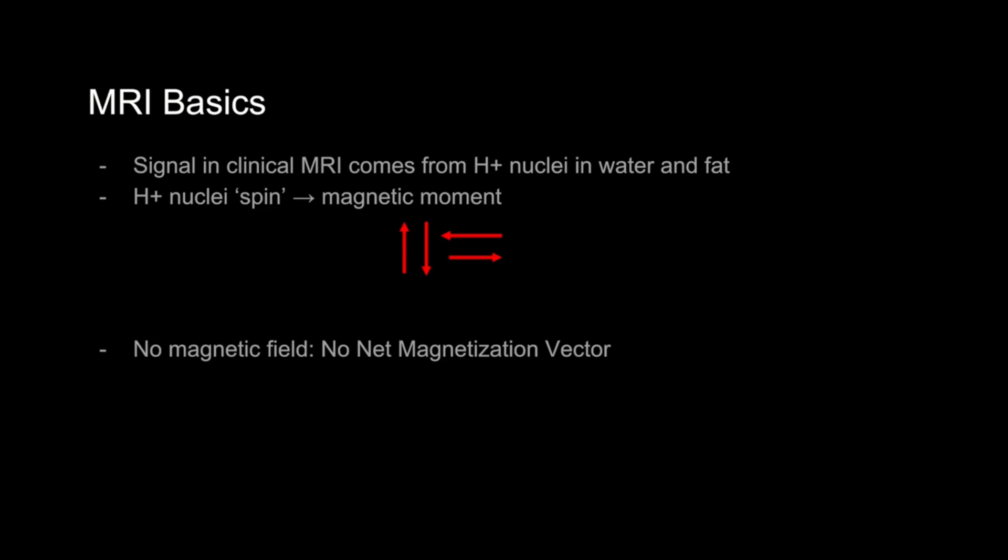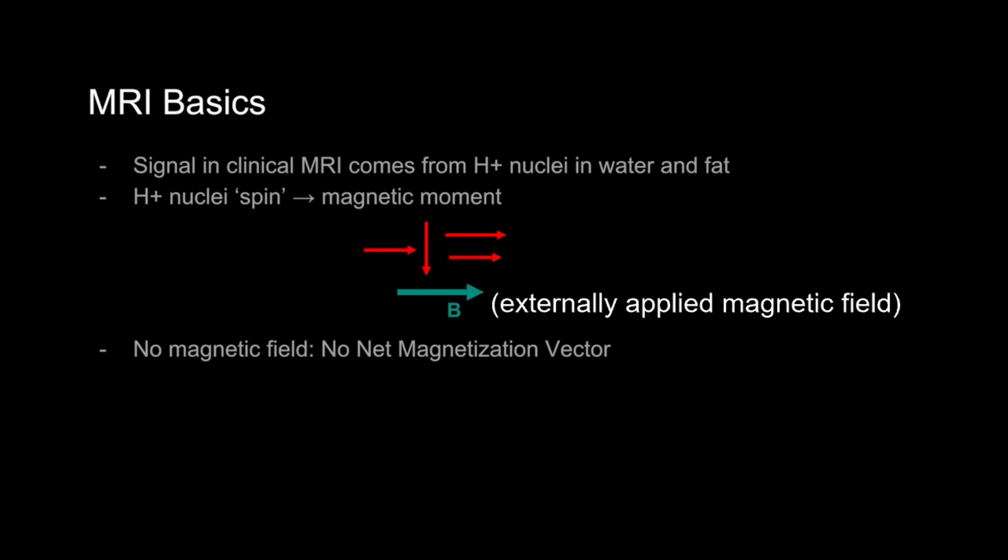In an externally applied magnetic field, however, like an MRI machine, the tiny bar magnets tend to want to align with the magnetic field. So in a tissue, you end up with more magnetization in the direction of the magnet. The tissue has a net magnetization vector in the direction of the main magnetic field as shown here.